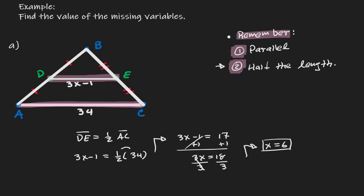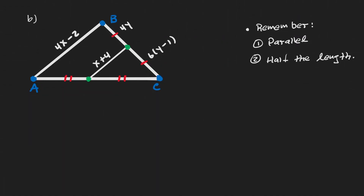Now let's take a look at another example. We're going to approach it the same way and identify the missing variables. Notice that there's something special about those green points — let's call them point D and point E. Those points are also the midpoints of their individual line segments. This line segment is congruent to this line segment, so D is right in the middle, and the same conclusion applies to E on the other side.